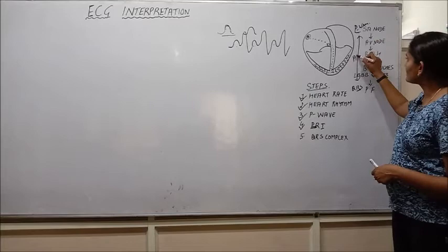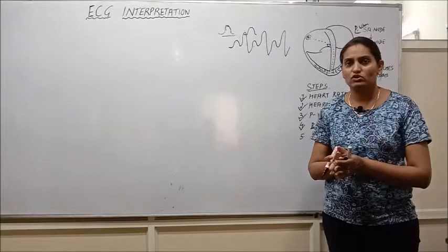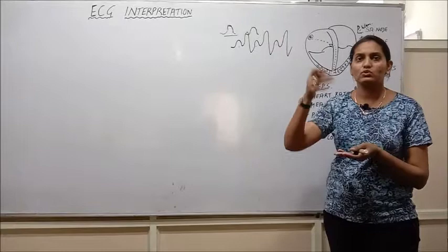Simply we can say that PR interval is the time between the atrial contraction and the ventricular contraction, or we can easily say the time in which the impulse travels from the atria to the ventricles is known as the PR interval.